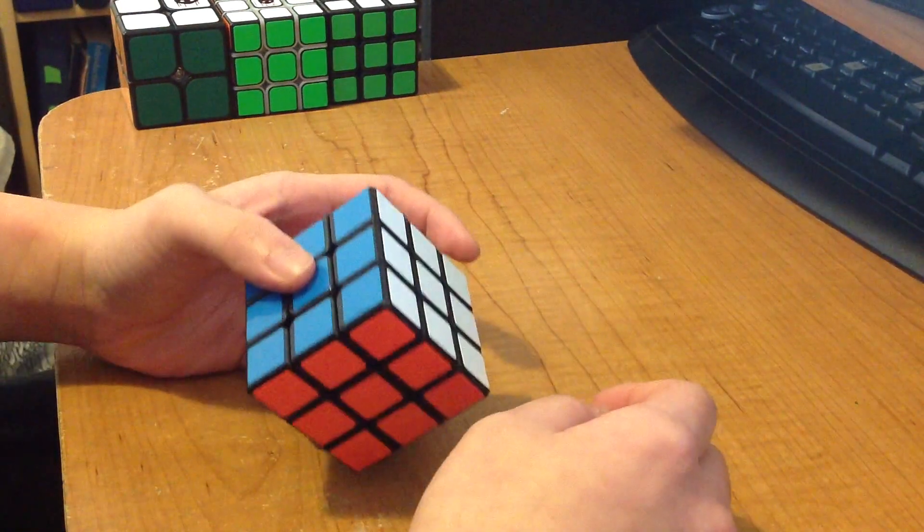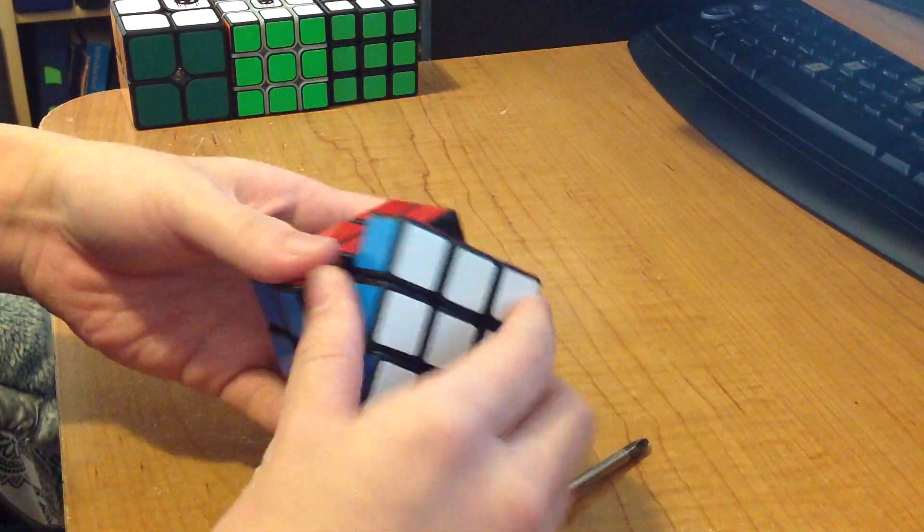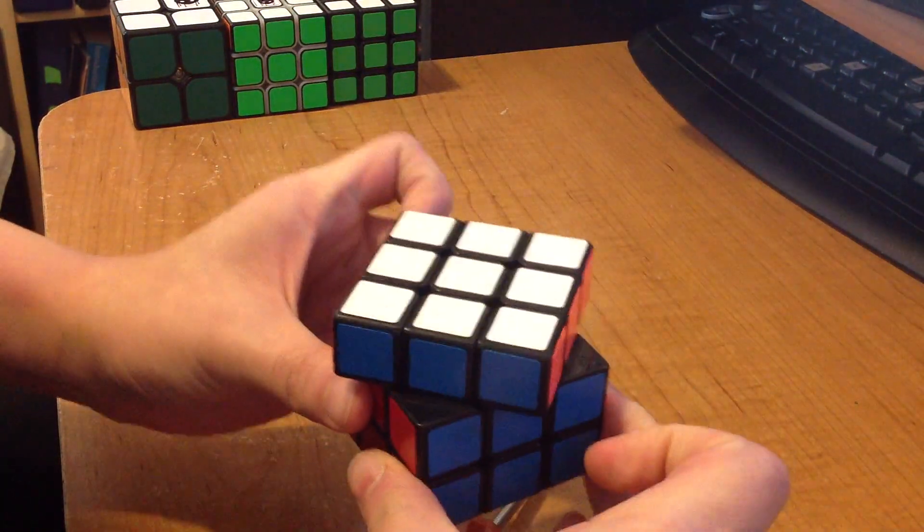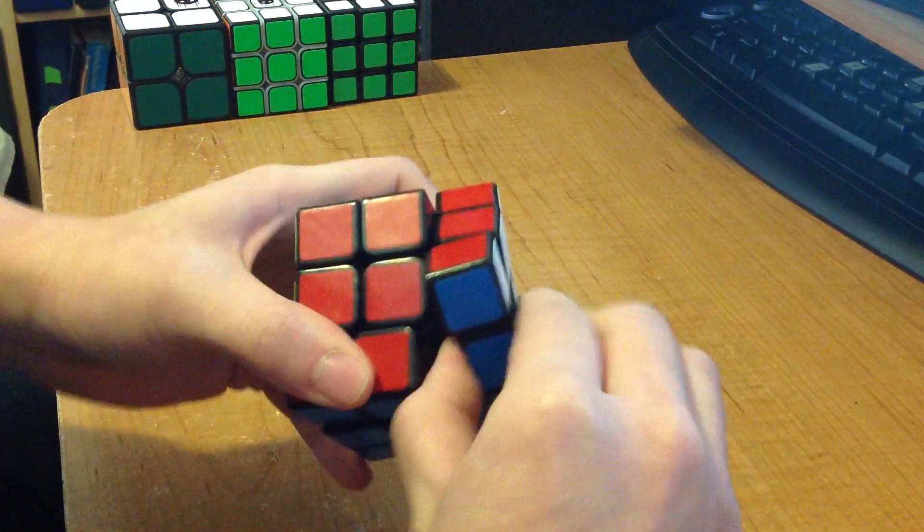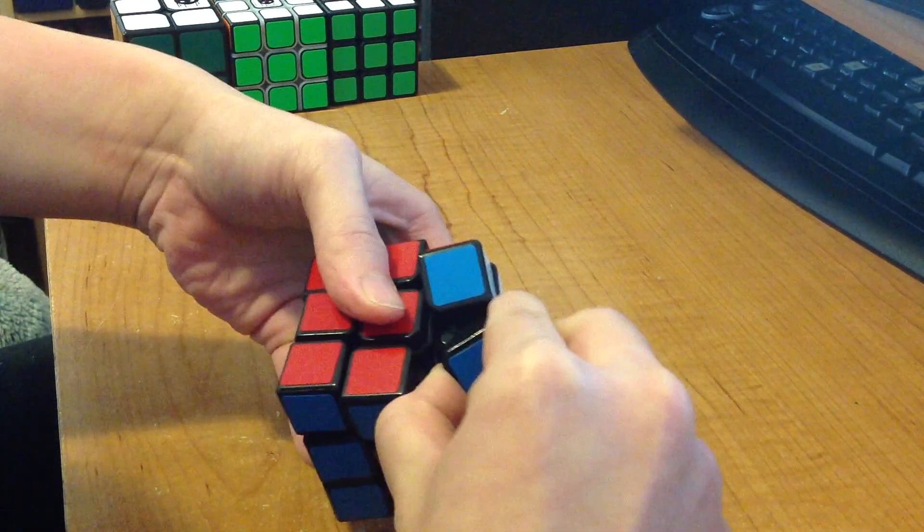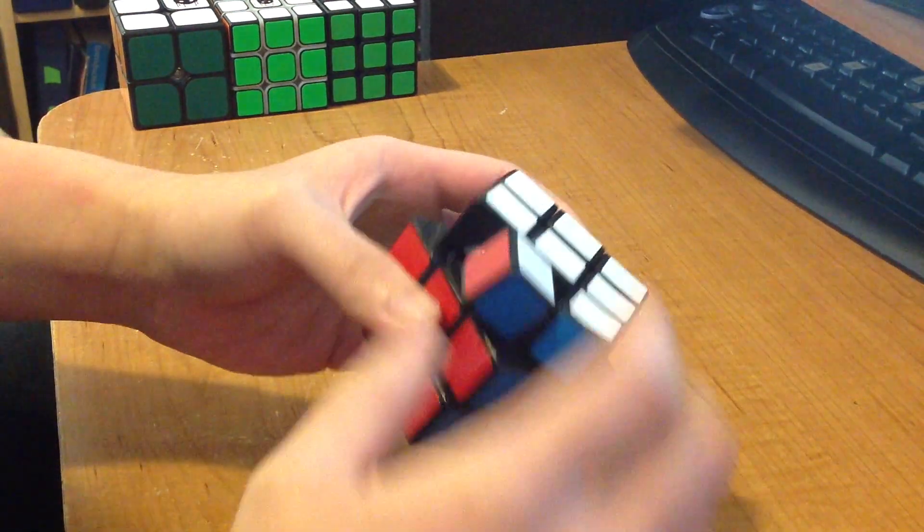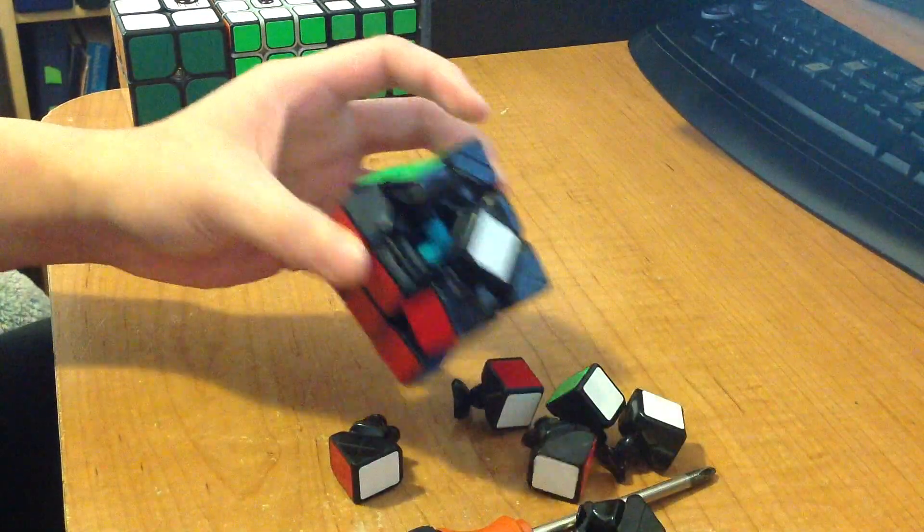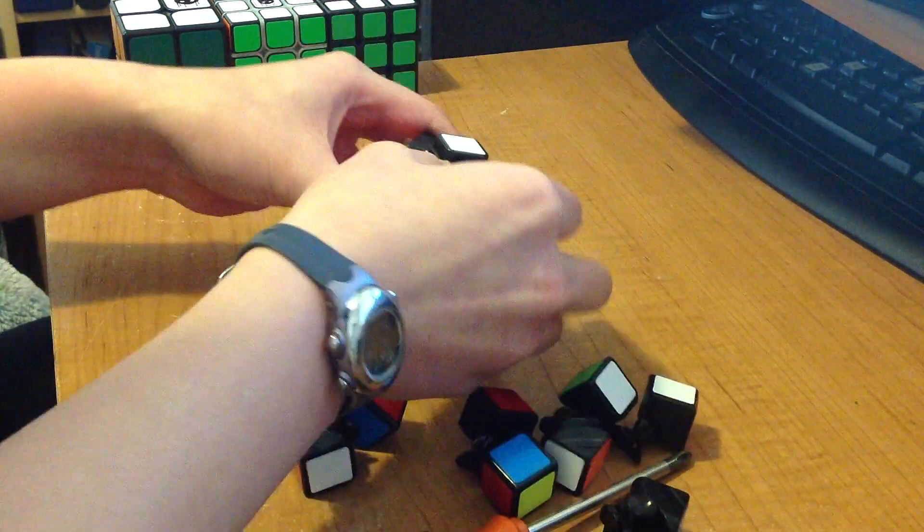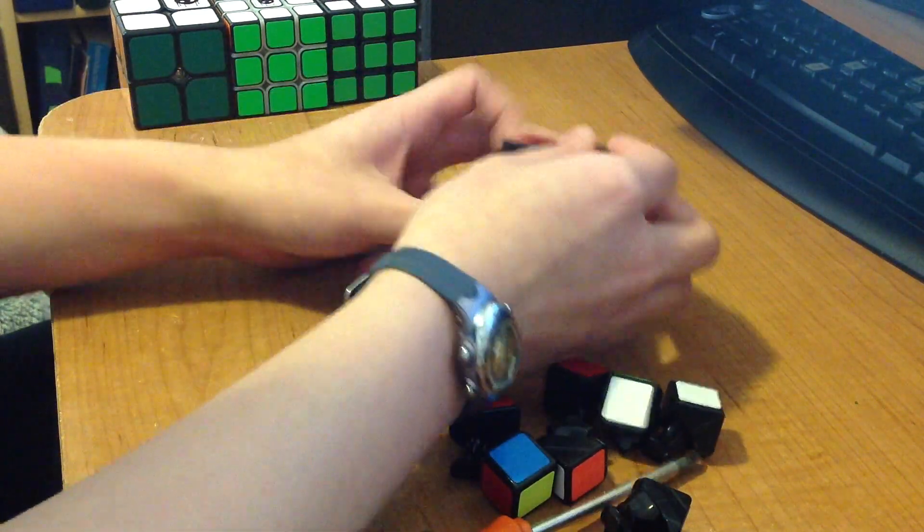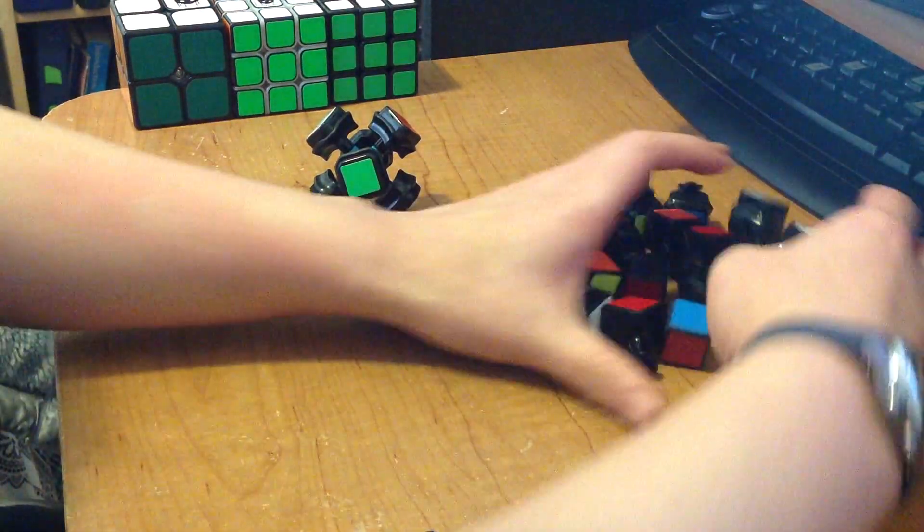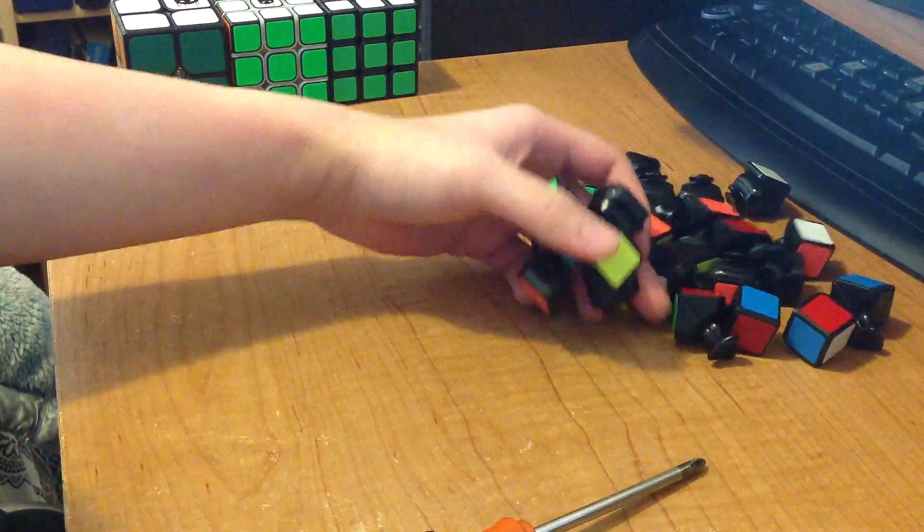First thing you want to do is completely disassemble your Weilong. So I just take out one edge, turn it 45 degrees, and then twist it counterclockwise until it pops out. Sometimes it takes a lot of force. In this case, since this cube is pretty tight, it took a little more force than usual. So you just disassemble the entire cube. I'm not going to be assembling this solved, so I don't really care. I'm just going to put all of them in a pile.